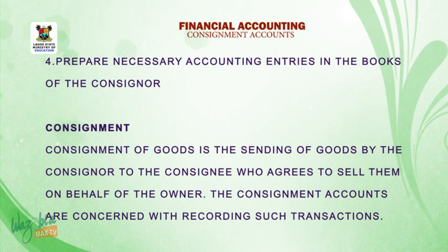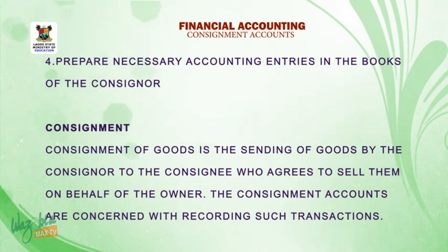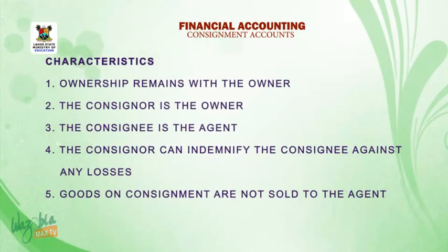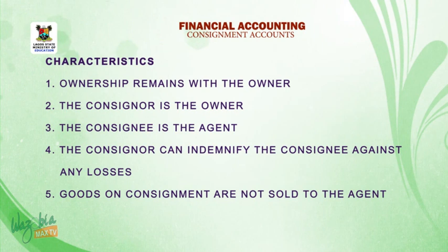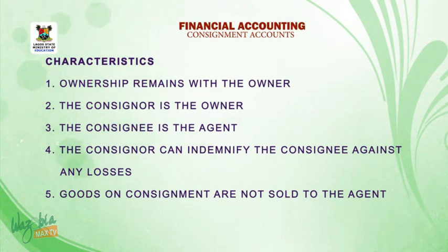Consignment of goods is the sending of goods by the consignor to the consignee, who agrees to sell them on behalf of the owner. The consignment accounts are concerned with recording such transactions. Characteristics: one, ownership remains with the owner; two, the consignor is the owner; three, the consignee is the agent; four, the consignor can indemnify the consignee against any losses.